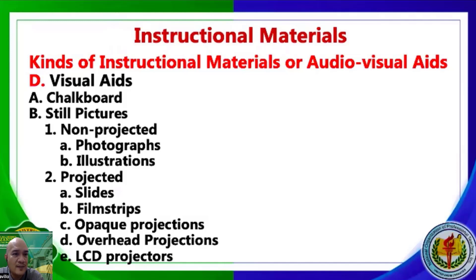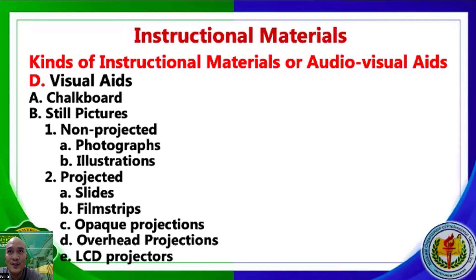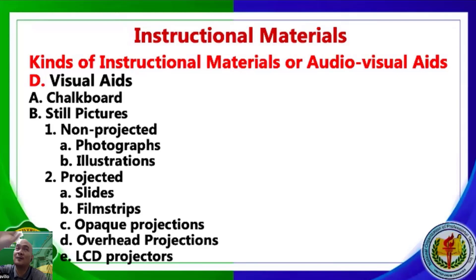Projected materials are those projected on a screen — slides, film strips, opaque projectors, overhead projectors, LCD projectors, and now smartboards. Even cell phones now have features to project on a wall. Those are projection materials, belonging to visual aids. Exhibits include school-made displays, bulletin boards in hallways — announcements, guidance services, science, math boards — those are considered instructional materials because they also help students.